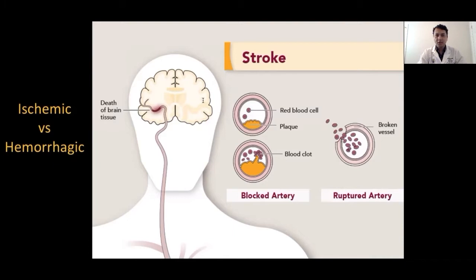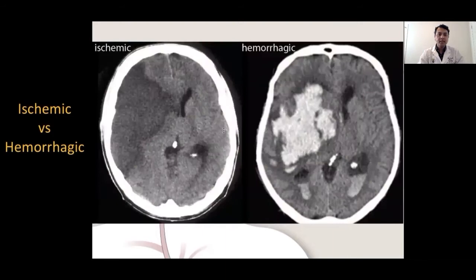Stroke is defined as a syndrome of acute onset neurological dysfunction caused by a disruption in blood flow to part of the brain. Stroke is of two types: one is ischemic, and another is hemorrhagic, and these two are dramatically opposite conditions. In ischemic stroke, the artery supplying the brain is blocked, causing brain injury due to lack of blood supply. While in hemorrhagic stroke, the artery supplying the brain is ruptured, causing bleeding in the brain and injuring the surrounding tissue. Ischemic strokes constitute 80% of all strokes.